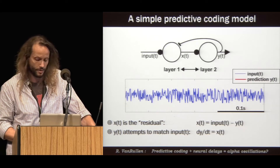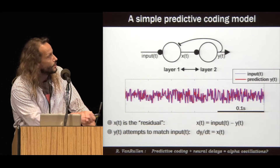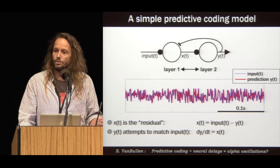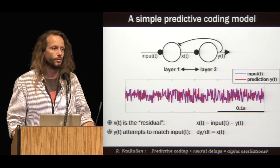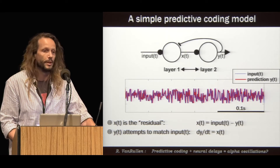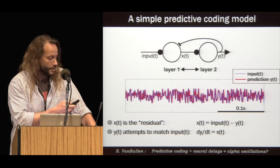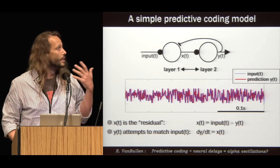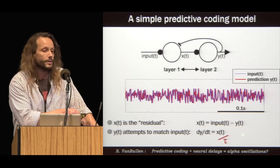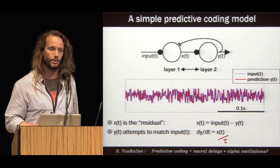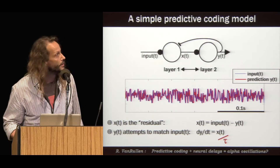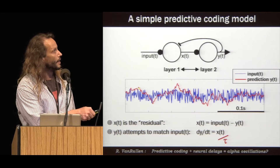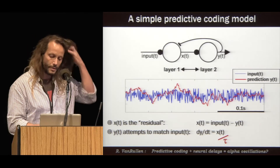This first version of the system works very well — it can track any input, even random ones. Here the input is in blue and the prediction is in red. But that's just an idealized system. If we take into account biological constraints, we can end up with a system that behaves very differently. An integrator neuron in the brain cannot respond instantaneously, but would have a membrane time constant tau on the order of about 20 milliseconds that would slow down its responses. Including tau in the equation, the system can still track its inputs but ignores fast fluctuations and acts as a low-pass filter.